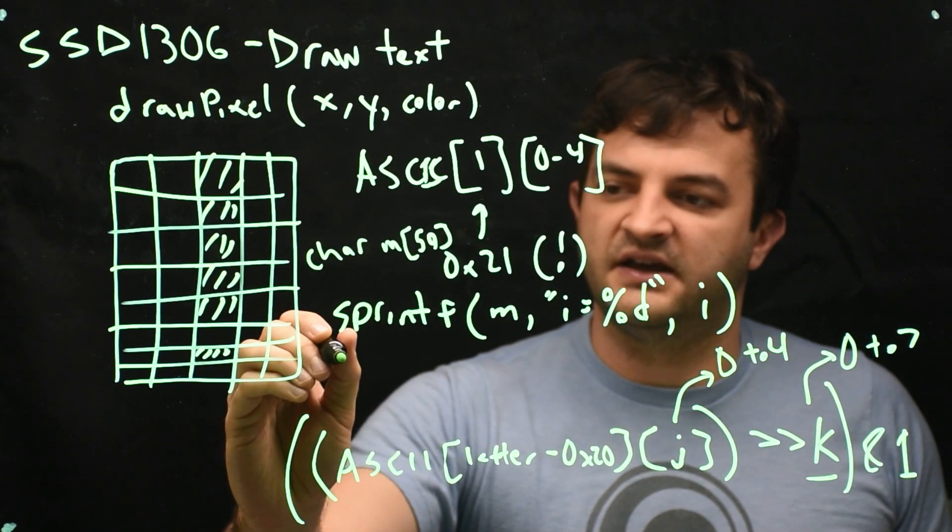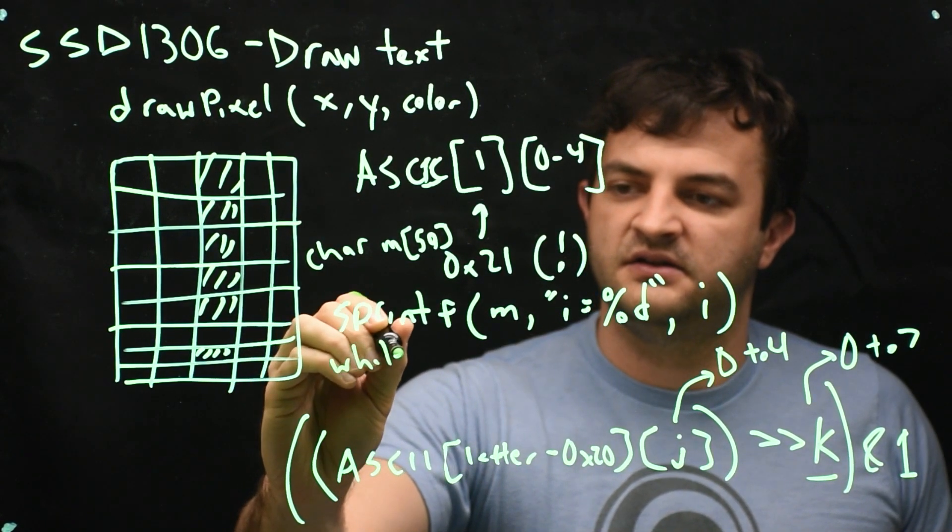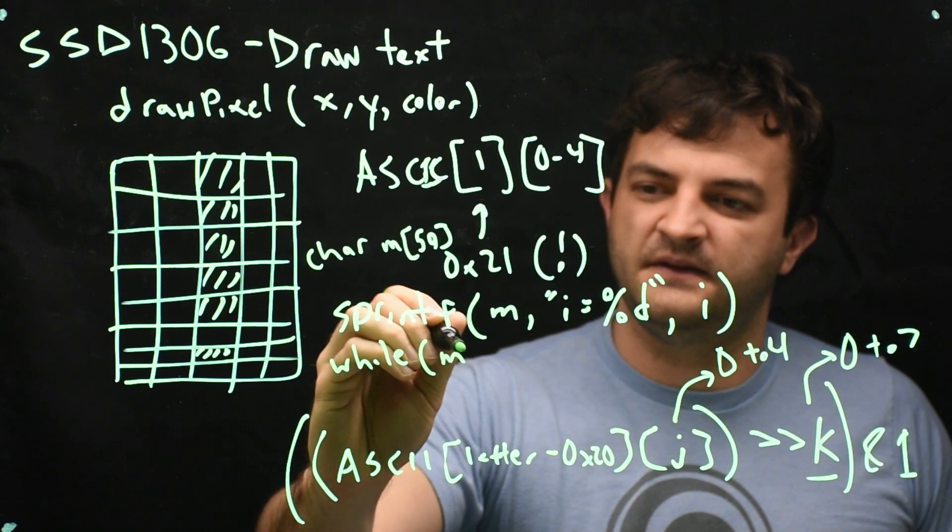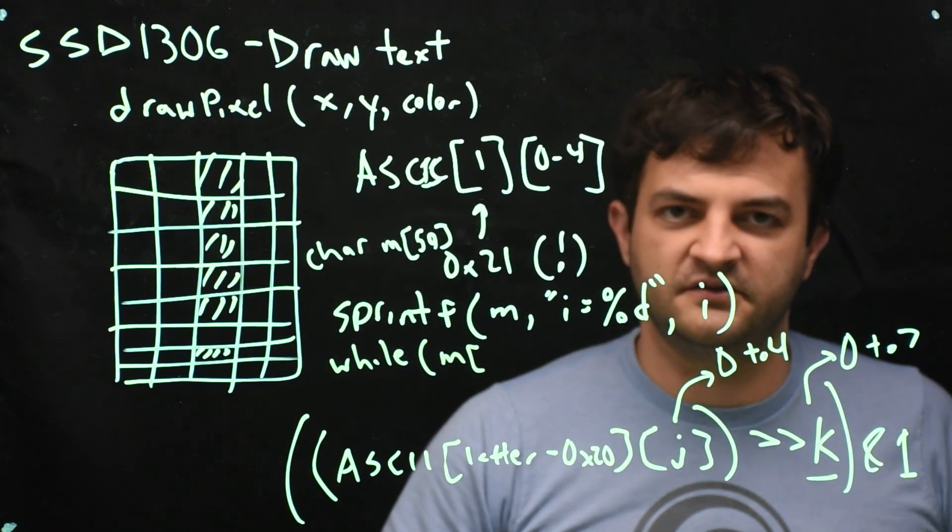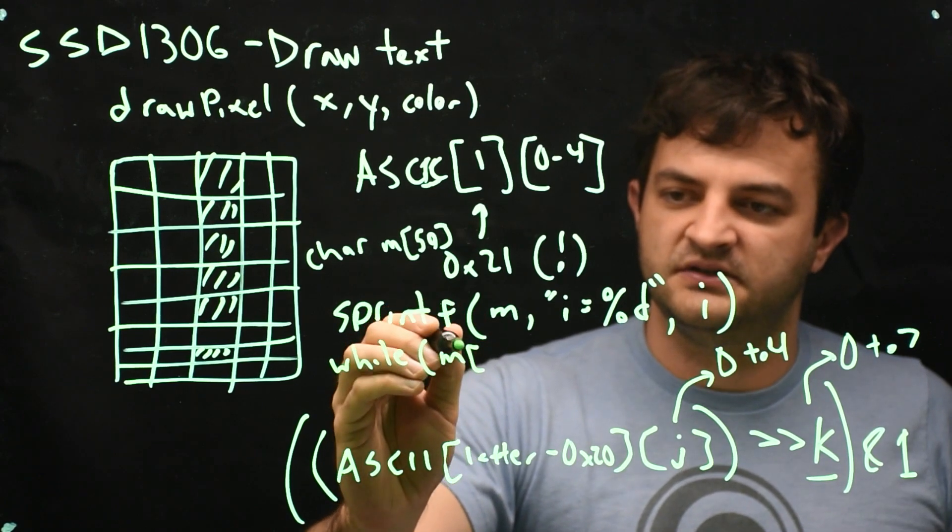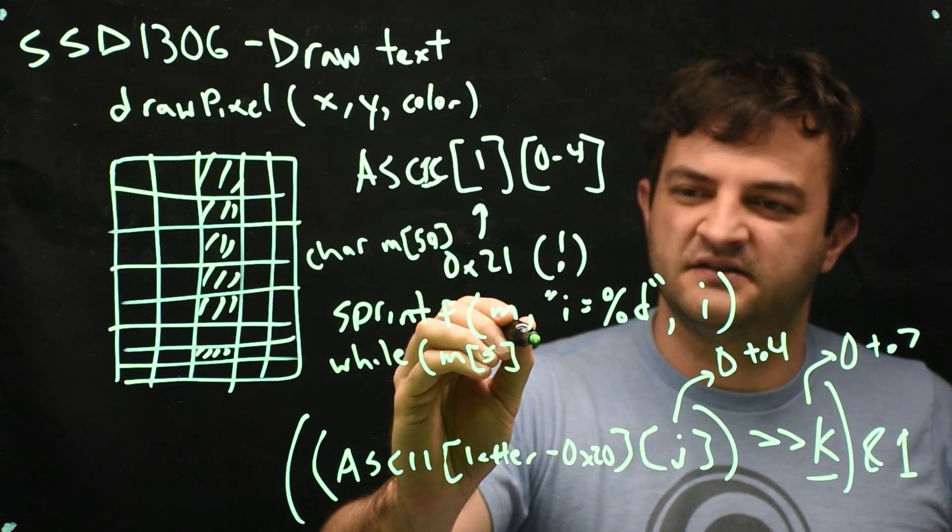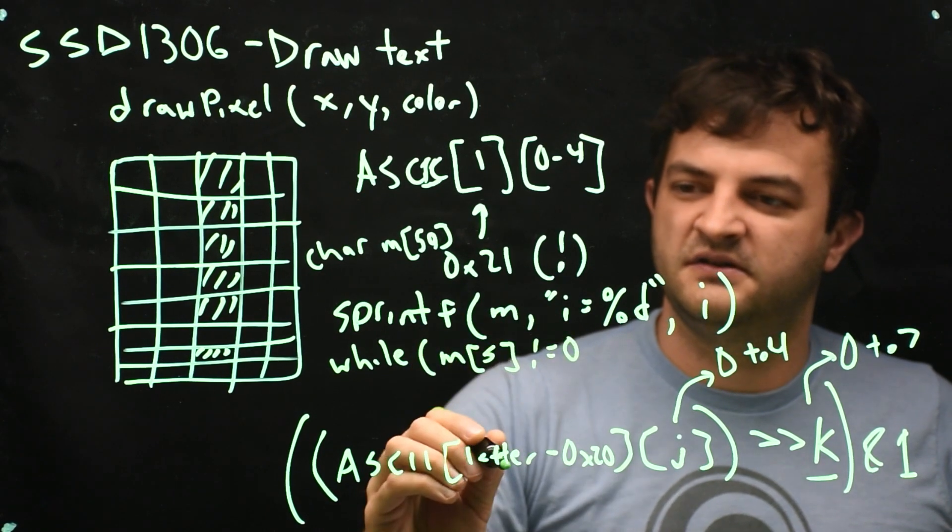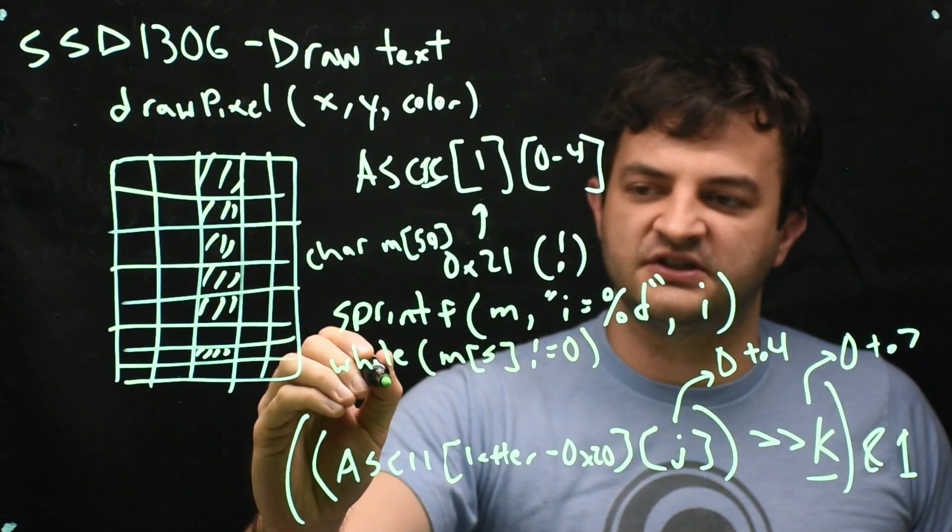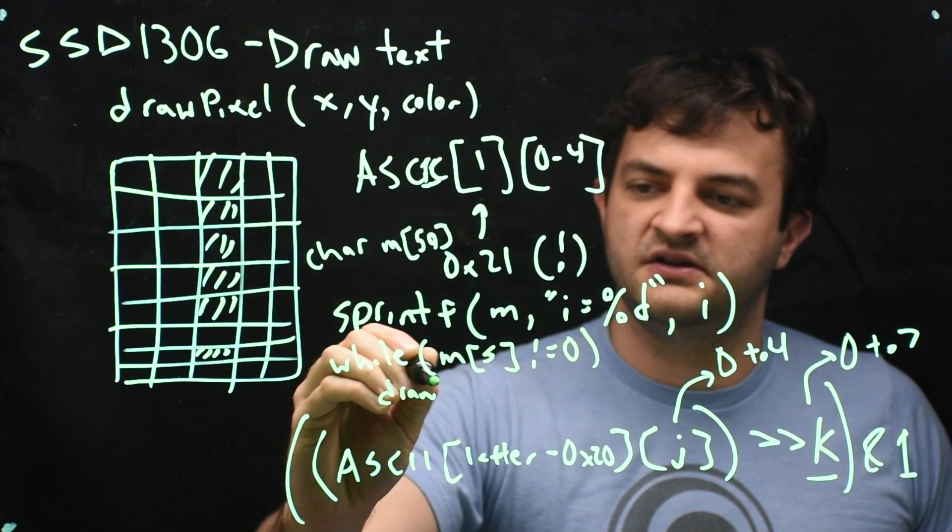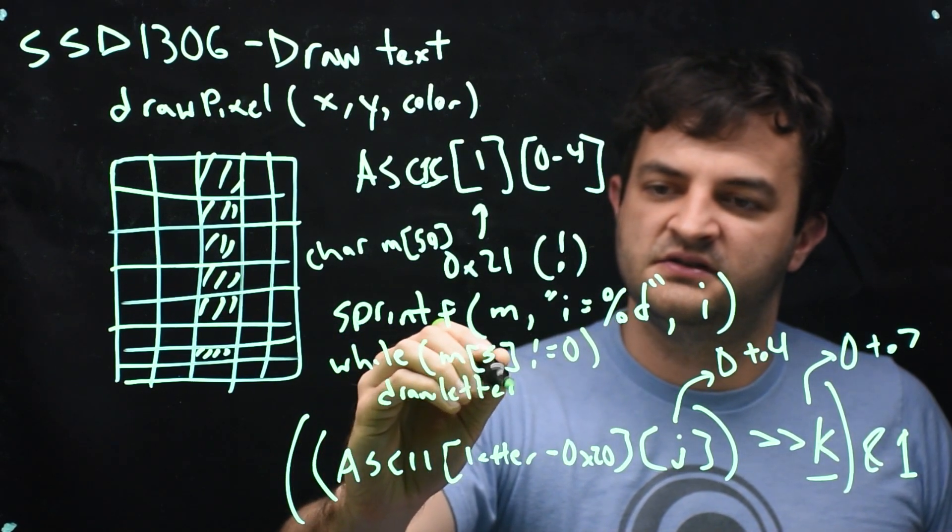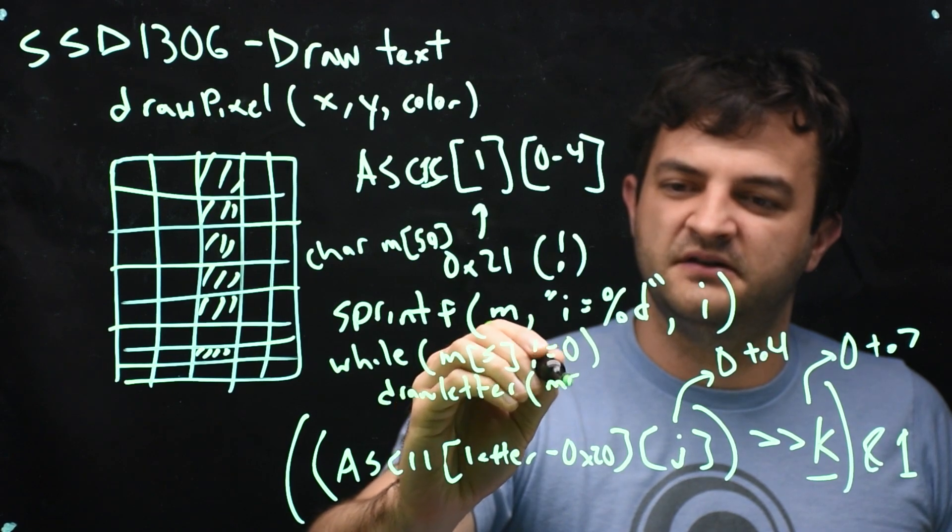So we'll be saying while m of some other number that we're iterating over, let's call it I don't know, s, does not equal 0, we will call some function that we wrote called like draw letter, and we will send it m of s. So m of s is letter.